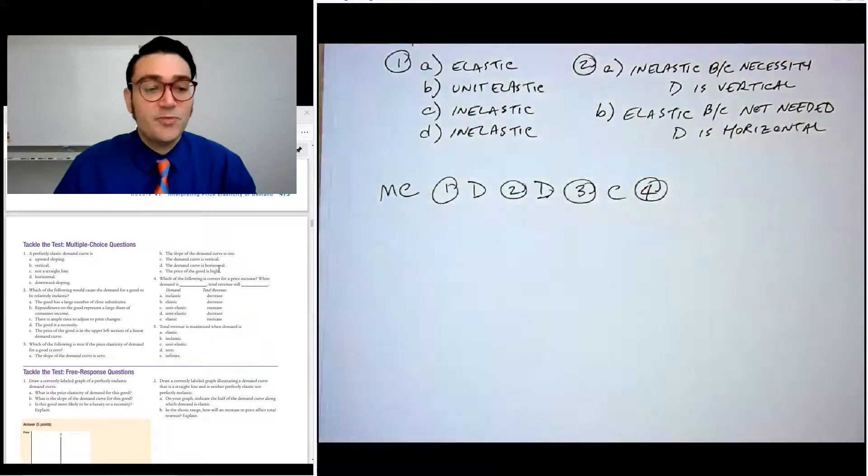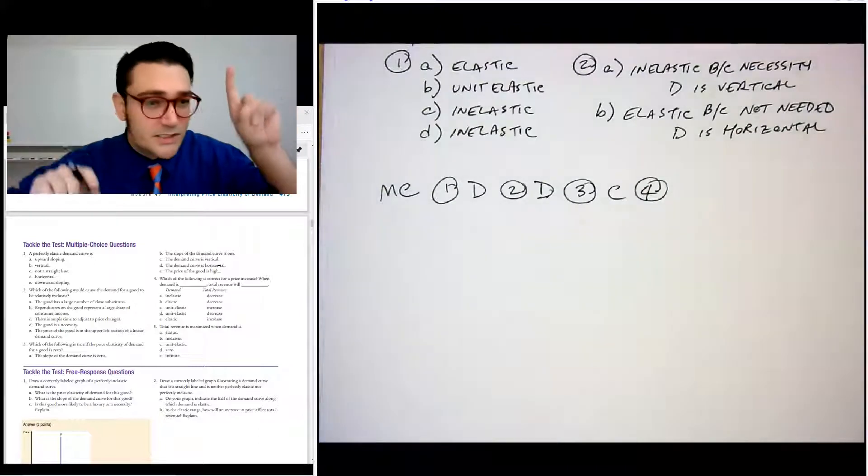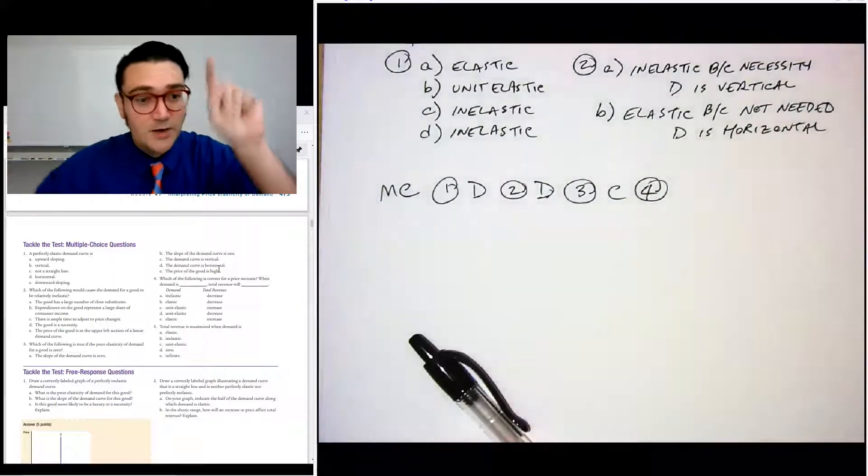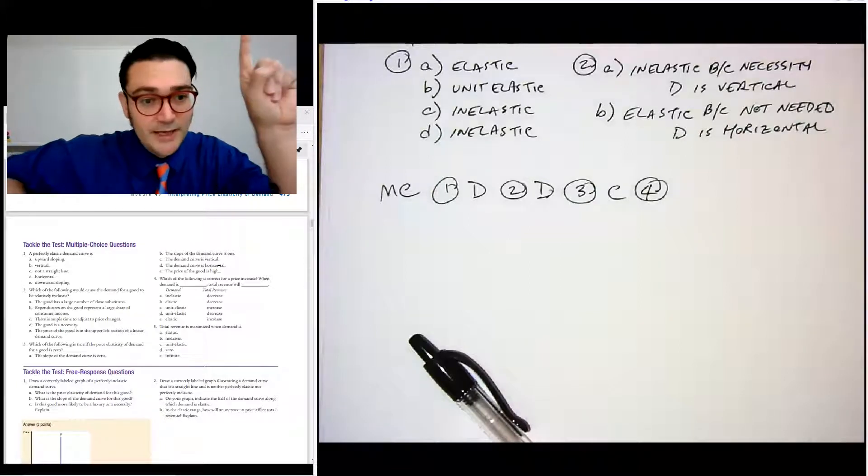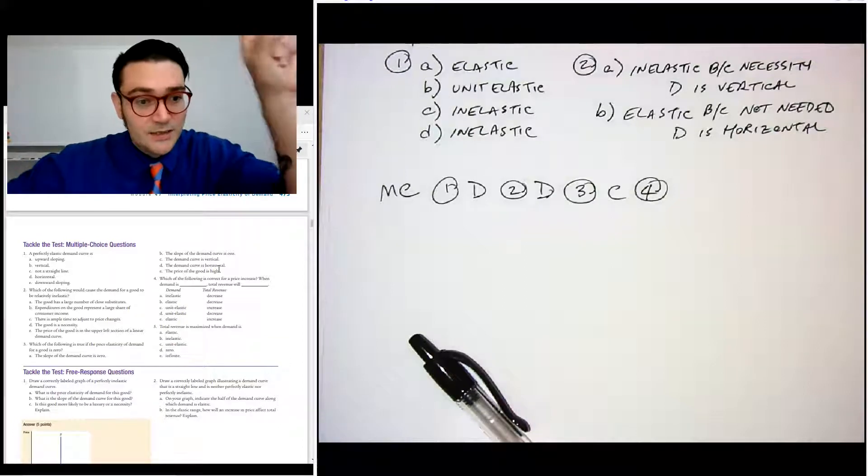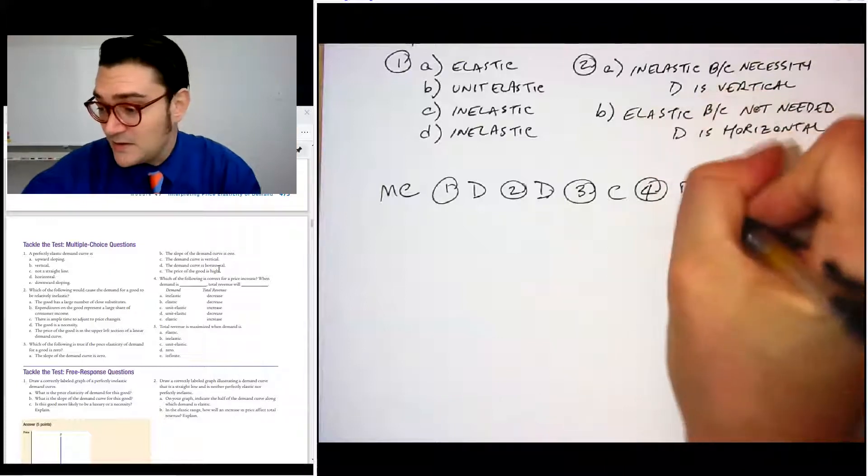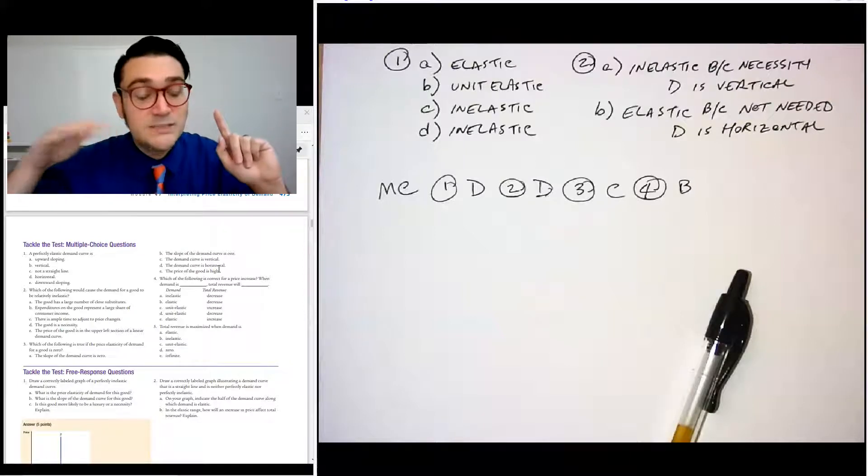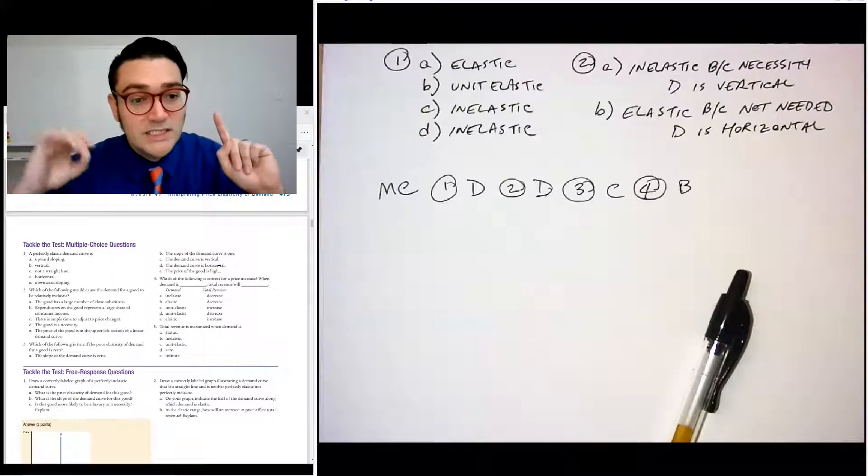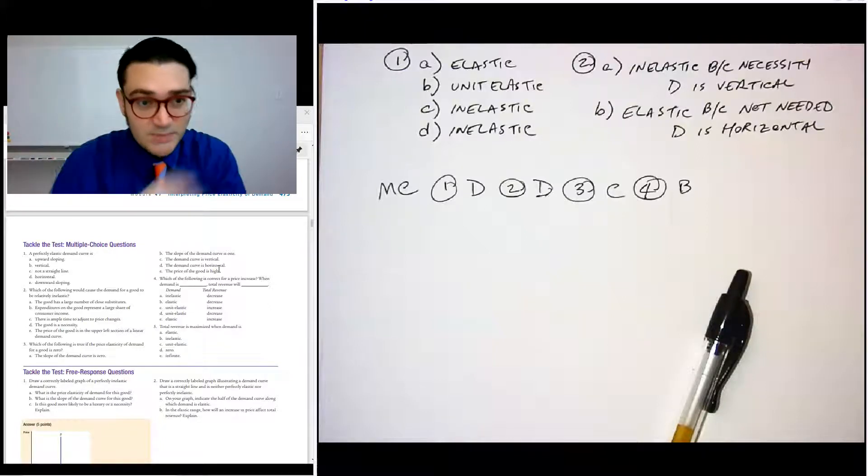Number four, which of the following is correct for price going up when demand is blank, total revenue will blank. So this one is going to require us to pair some things, but I'm going to do the total revenue test with my arms. So demand goes up. If total revenue goes down, it should be elastic. So we can rule out A. If total revenue goes down, demand is elastic. So B is the correct answer. But let's see why the others are not. Unit elastic, well if it's unit elastic, then total revenue is maximized. It's not going to change. Elastic would be that if the price goes up and the total revenue goes up, then it's inelastic because your body's making an I.